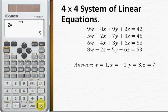And you can check your answer by pressing mode number 1. 9 times 1 plus 8 times minus 1 plus 9 times 3 plus 2 times 7, and you will get 42. You substitute all the W, X, Y, Z values into the other 3 equations to get the right-hand side value. See whether it is same or not. If it is same, then your answer is correct.